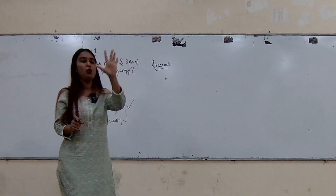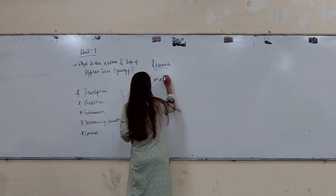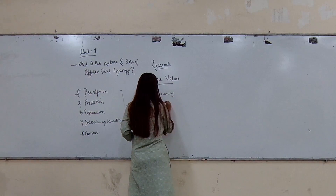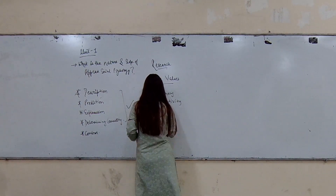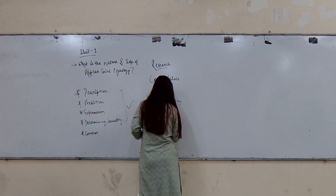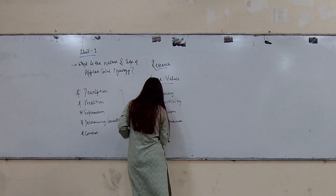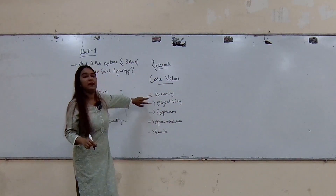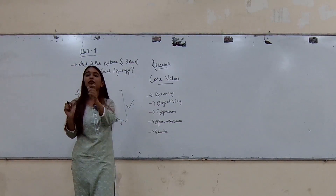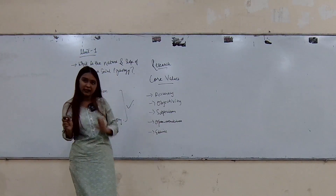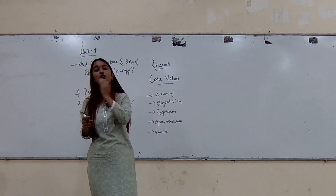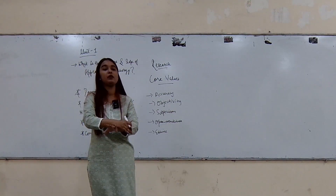Research is supposed to be a systematic method, so research follows five core values: accuracy, objectivity, skepticism, open-mindedness, and ethics. Accuracy means your research should be to the point. Objectivity means there should not be any bias. Skepticism means you need to be critical about every research idea you have and every finding you get. Open-mindedness means you should be open to getting any kind of results.